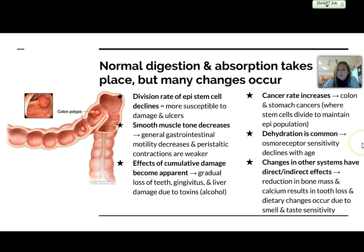Dehydration is common because the osmoreceptor sensitivity declines. Changes in other systems have direct or indirect effects on the digestive system, such as a reduction in bone mass and calcium, which is how tooth loss happens. Dietary changes might also occur due to lack of sensitivity in the smell and taste receptors of the tongue.